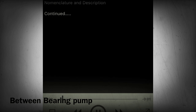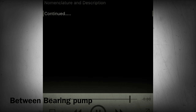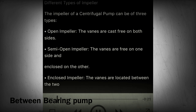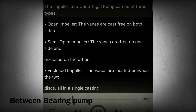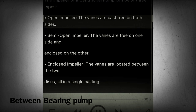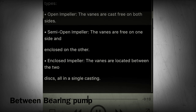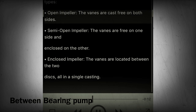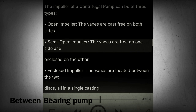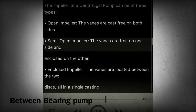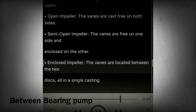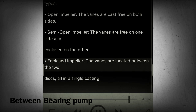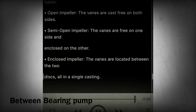Sections 20-21 - Different types of impeller. The impeller of a centrifugal pump can be of three types: Open impeller — the vanes are cast free on both sides. Semi-open impeller — the vanes are free on one side and enclosed on the other. Enclosed impeller — the vanes are located between two discs, all in a single casting.